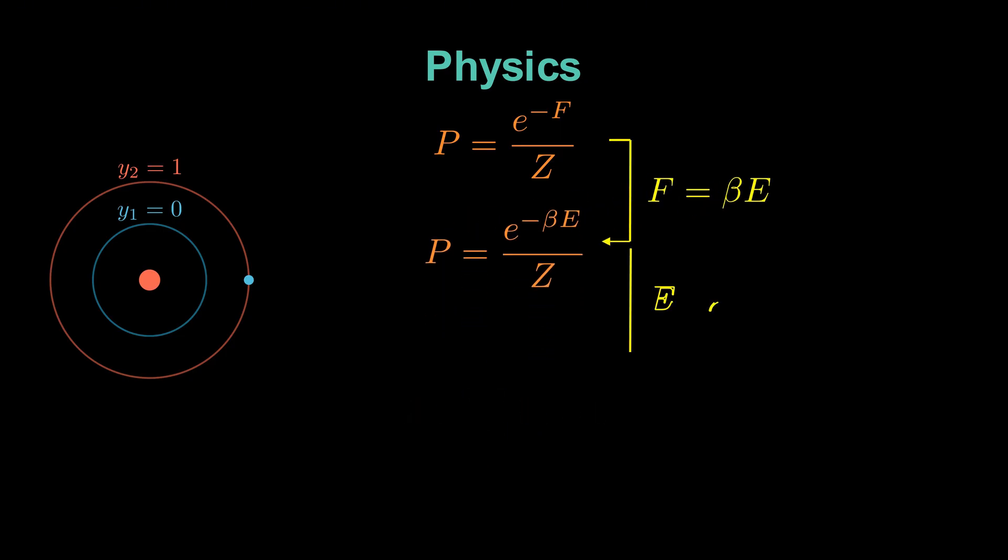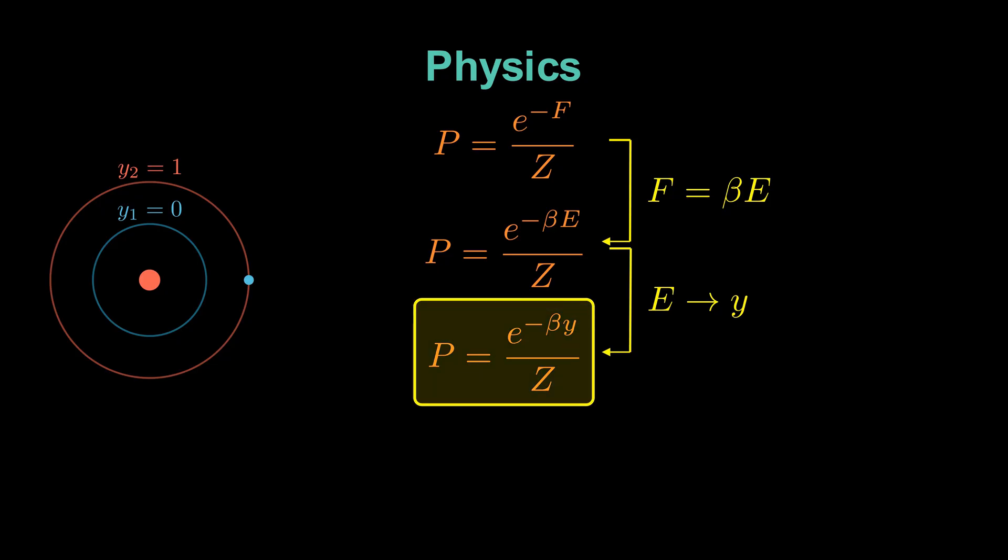With Y equal to zero for the lower orbit and Y equal to one for the upper orbit, this may look innocent, but it's the seed of something extraordinary. It's the same functional form used in logistic regression. We just haven't seen it yet.